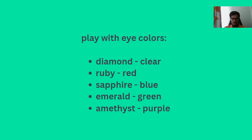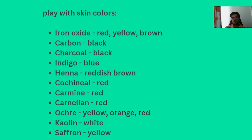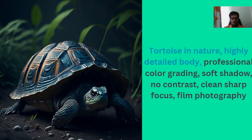A couple more tips: when you want to play with eye colors, you can use 'diamond' for clear eyes, 'ruby' for red eyes, 'sapphire' for blue eyes, 'emerald' for green eyes, and 'amethyst' for purple eyes. Similarly, when playing with skin color, you can use 'carbon' or 'charcoal' for black, 'indigo' for blue, and so on, depending on what you want to generate.